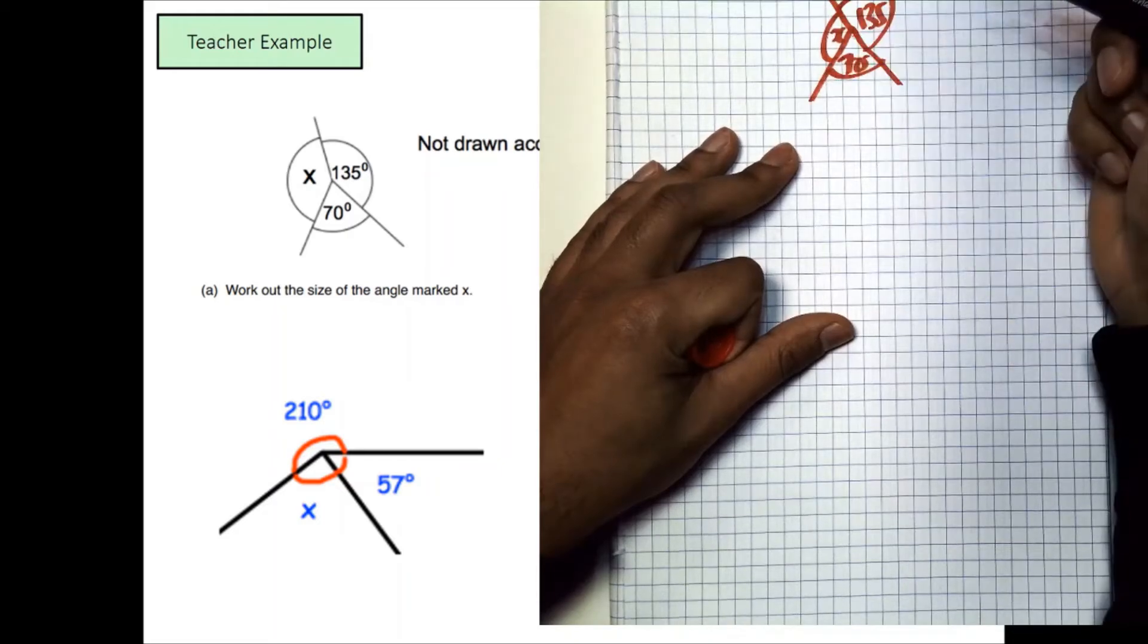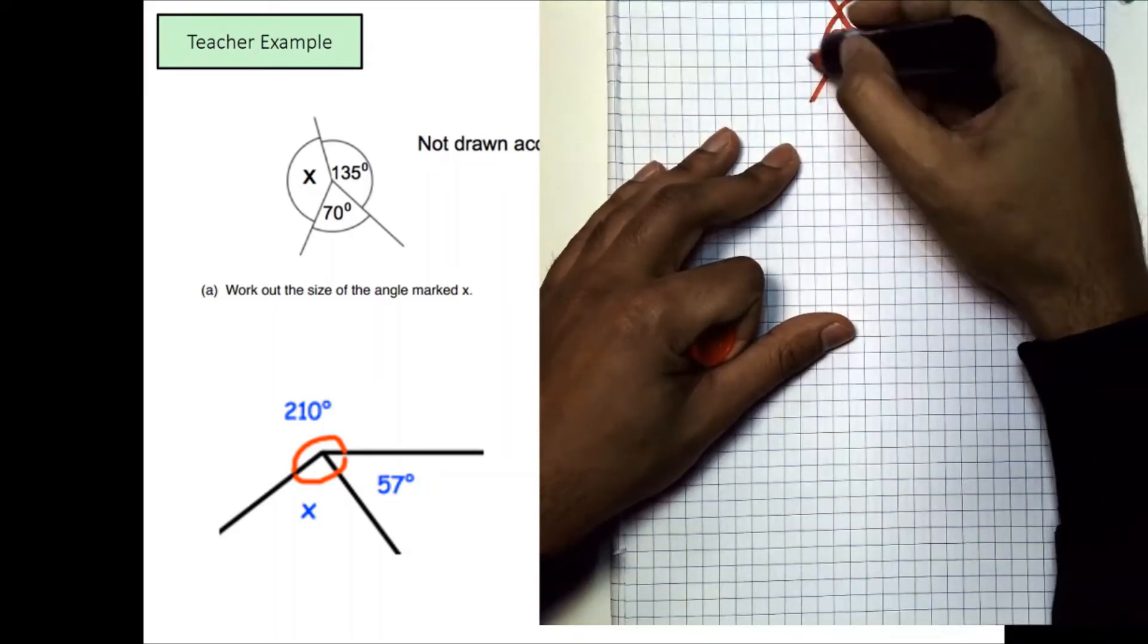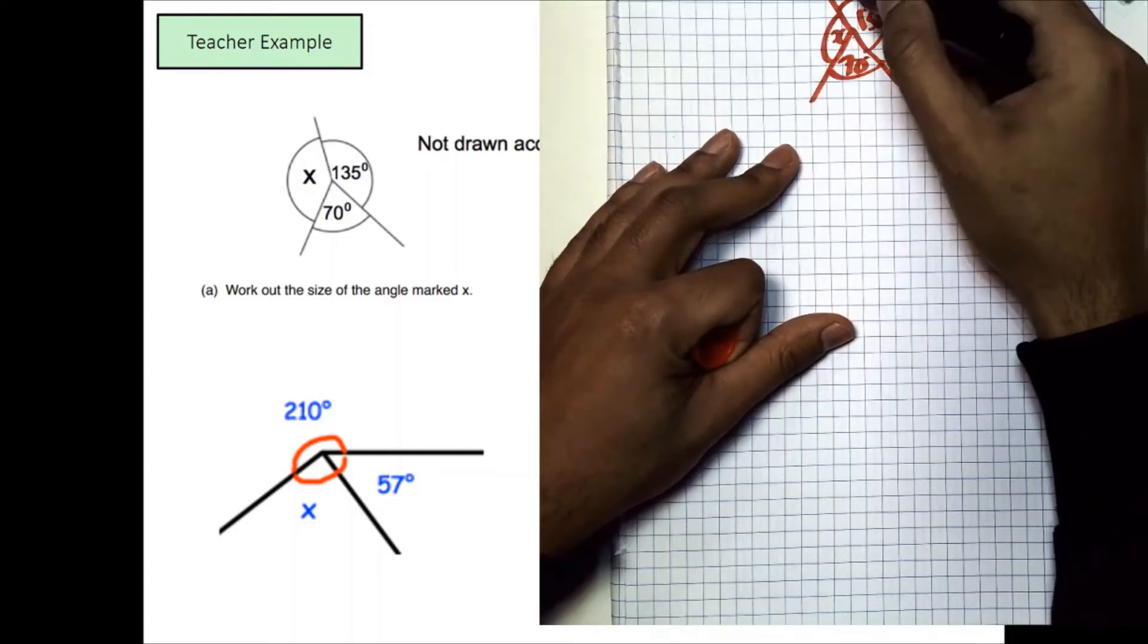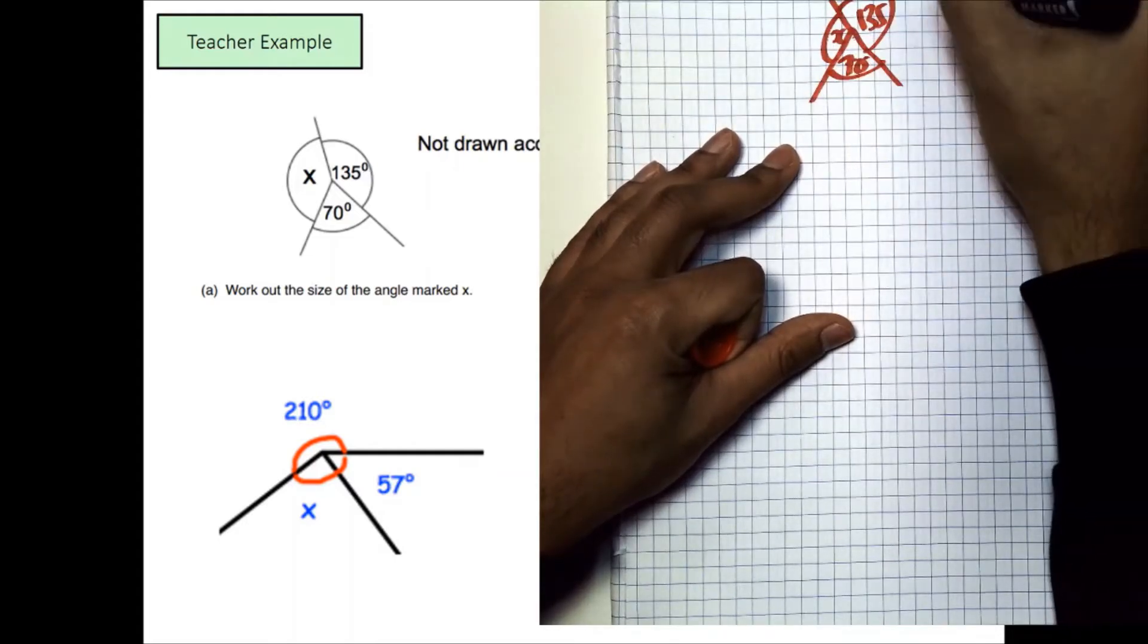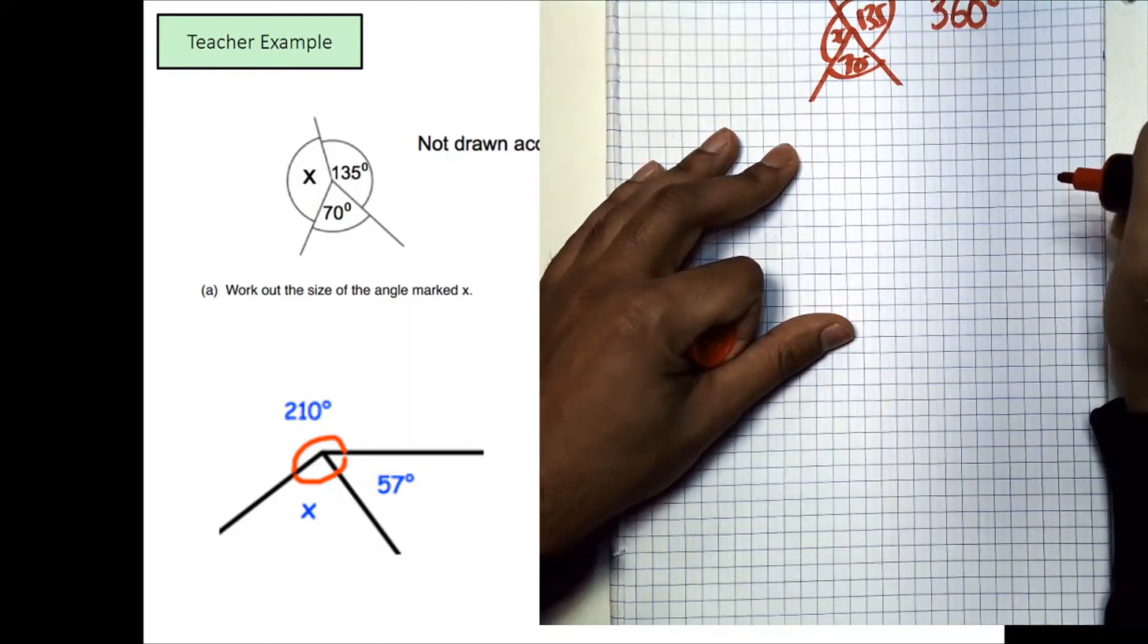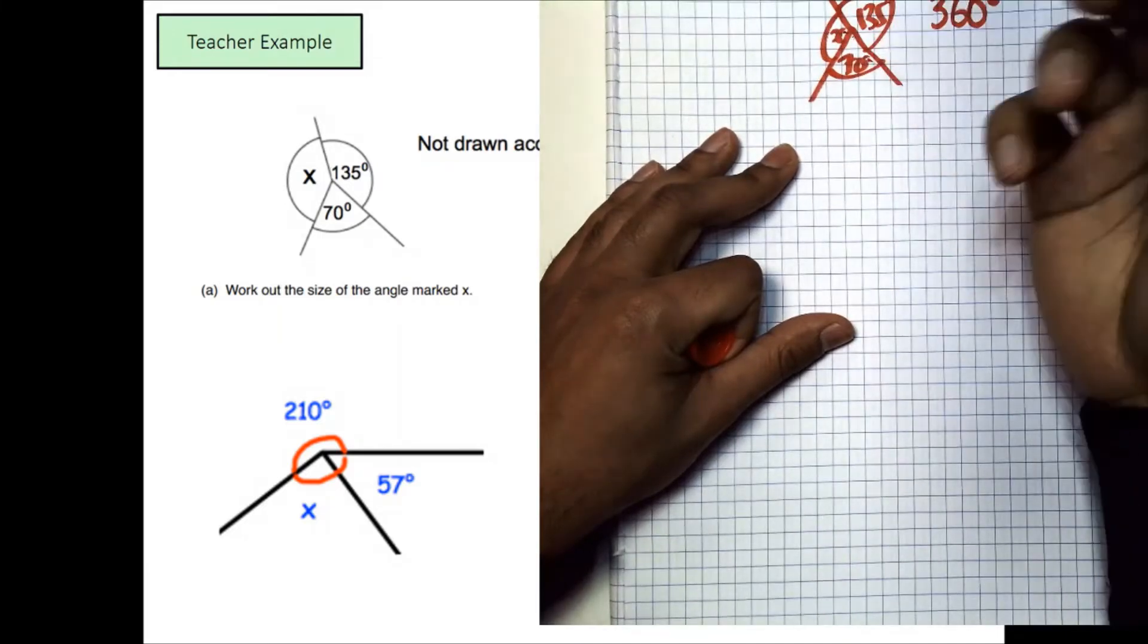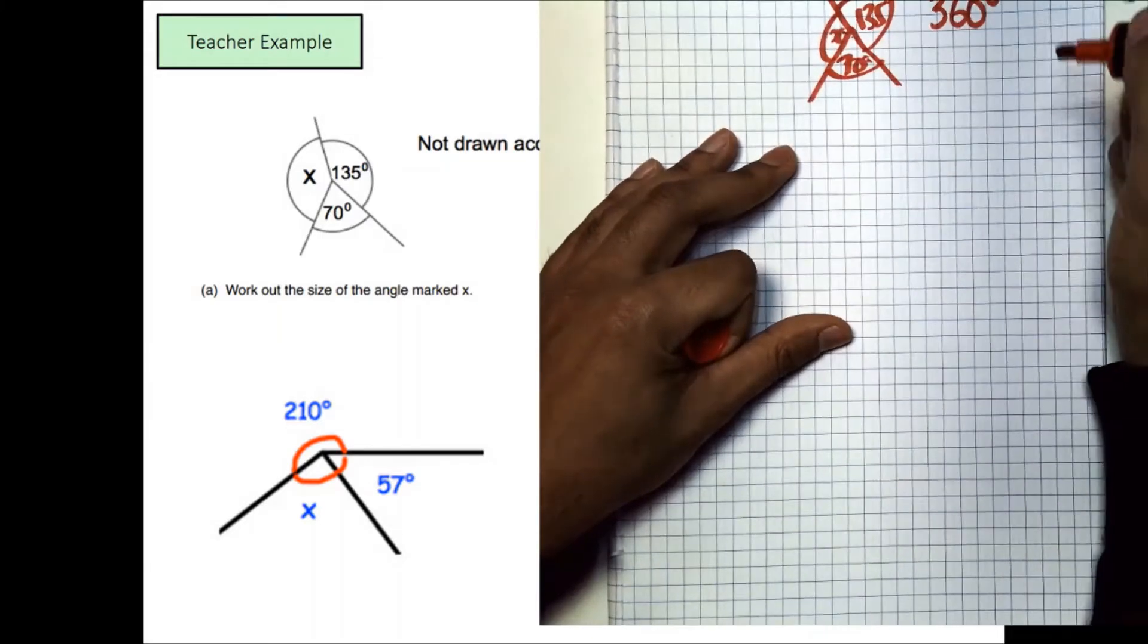Now we have a whole point over here and we have three angles inside it. One of the angles we don't know. That's what we want to work out. We know two of them and we know the total point as well, because we know it's a full turn. We know that the full turn is always going to be equal to 360 degrees.